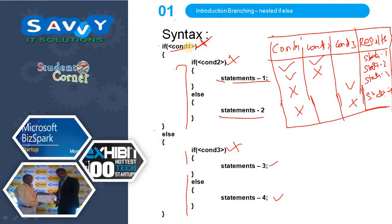Even though it is loop control structures or branching or decision making, we follow the same rule — there is no change. The condition may be simple or complex. If the number of statements is one, brackets are optional. If the number of statements is more than one, brackets are mandatory.